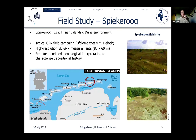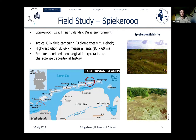I want to show a typical field study performed in our working group, which took place on the island of Spiekeroog, part of the East Frisian Islands in the very northwestern part of Germany, where we find a typical dune environment. In the course of a diploma thesis, a typical GPR field campaign was performed, including high resolution 3D GPR measurements covering an area of 85 by 60 meters, used for structural imaging and sedimentological interpretation to characterize the depositional history.